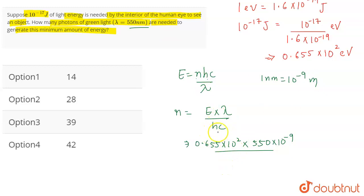Now, the combined value of H C: when we multiply the constants and the values of constants, we get the value of H C to be equal to 1240 into 10 to the power minus 9.